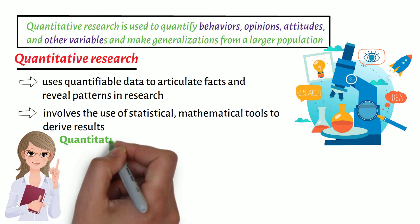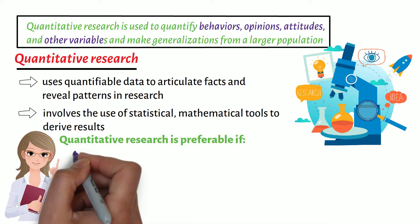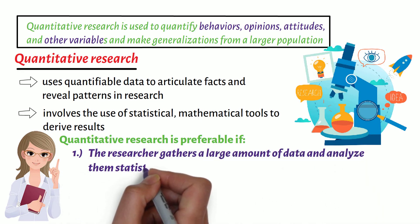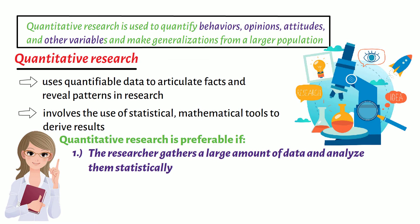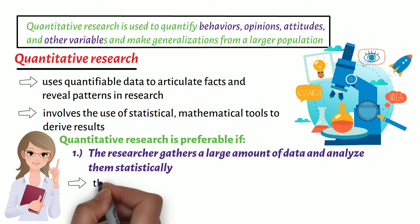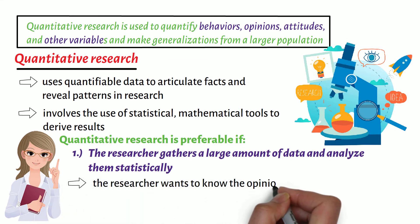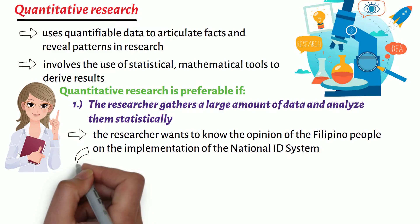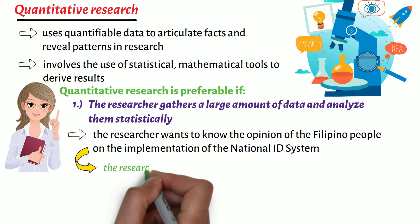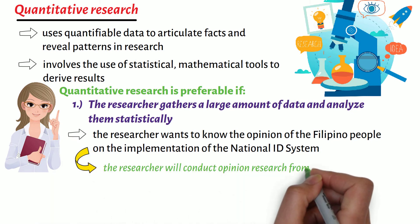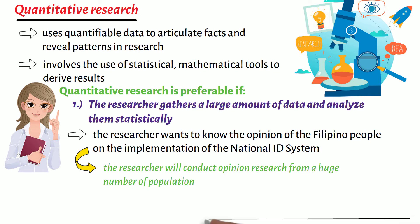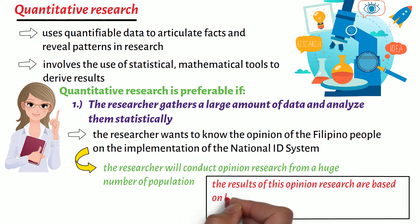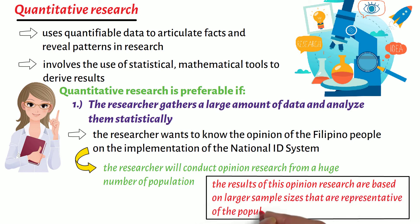Quantitative research is preferable if, first, the researcher gathers a large amount of data and analyzes them statistically. For instance, the researcher wants to know the opinion of the Filipino people on the implementation of the national ID system. Here, the researcher will conduct opinion research from a huge number of population. The results of this opinion research are based on larger sample sizes that are representative of the population.